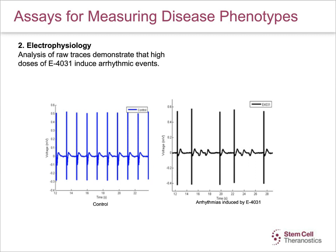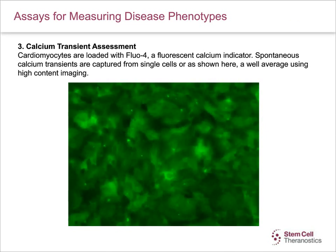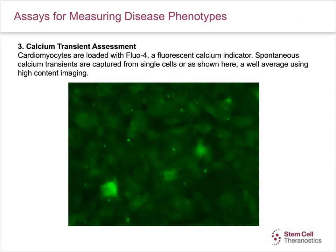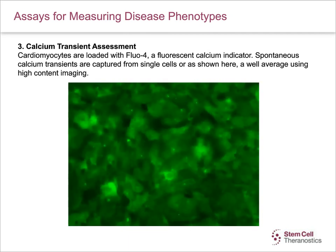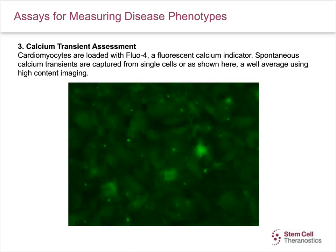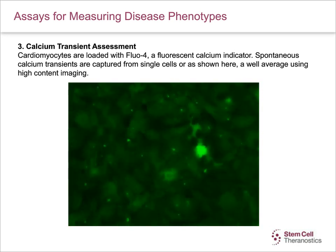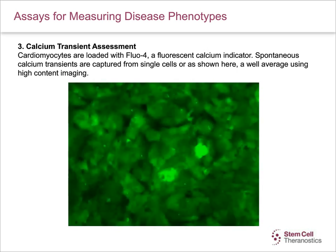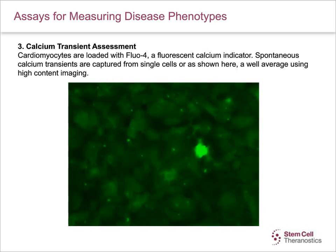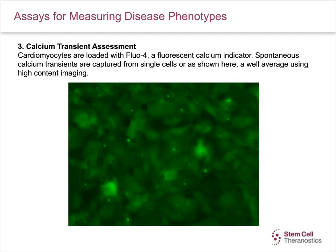This slide shows calcium transient assessment. Cardiomyocytes are loaded with a fluorescent calcium indicator fluorophore. Spontaneous calcium transients are then captured from single cells, or as shown here, as a well-average using high-content imaging. Once you play this video, you will notice the calcium transients appearing as bright sparks from time to time throughout the video.